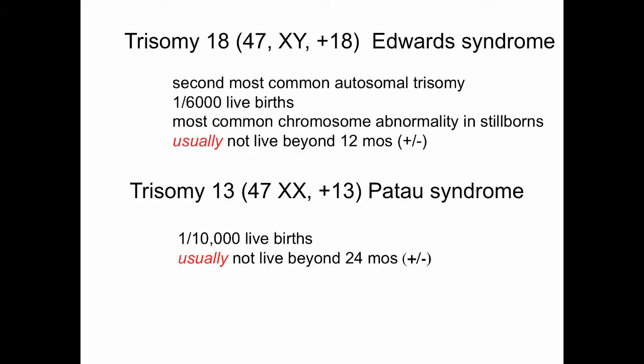Trisomy 18 is so-called Edwards syndrome, represented as 47XY plus 18. It's the second most common autosomal trisomy, occurring in 1 in 6,000 live births, and is the most common chromosomal abnormality in stillbirths. Individuals born with trisomy 18 usually don't live beyond about a year, with no sex preference. Trisomy 13, represented as 47XX plus 13, is Patau syndrome, usually occurring in 1 in 10,000 live births.